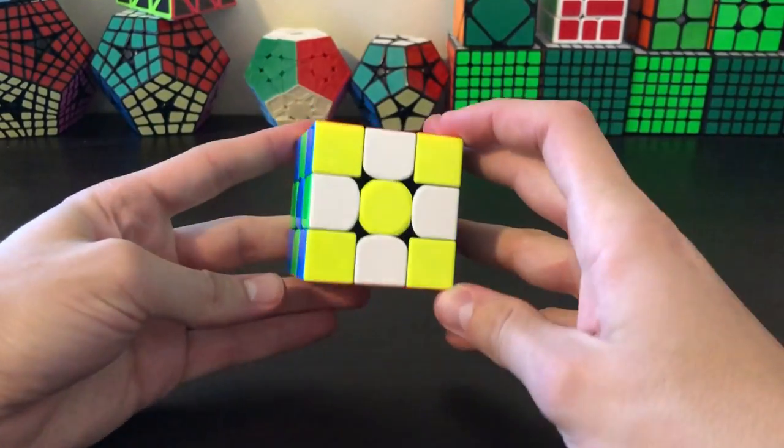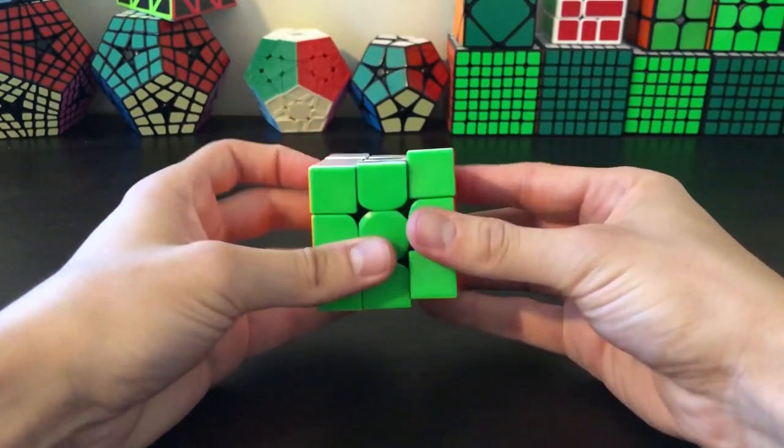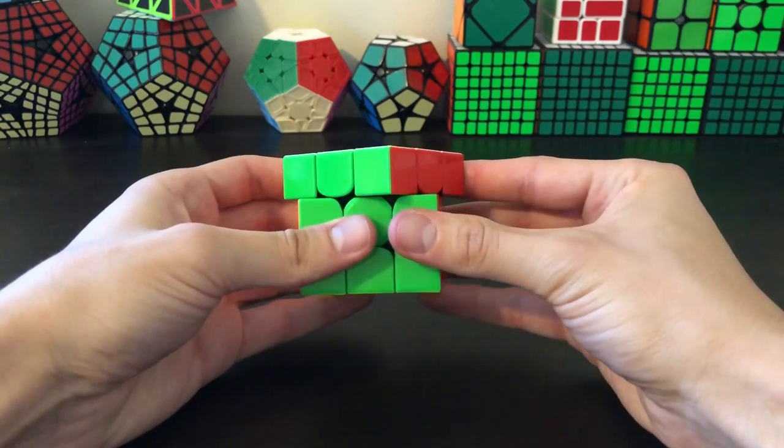The colors on this cube are pretty standard for a stickerless puzzle. They're pretty bright colors, they look very nice together. The corner cutting on this cube is on par with the rest of the 3x3s on the market, just over 45 degrees, and reverse corner cutting is just about line to line.